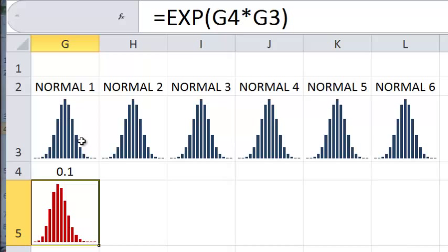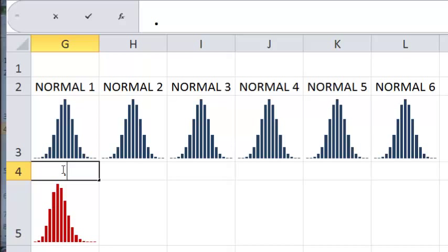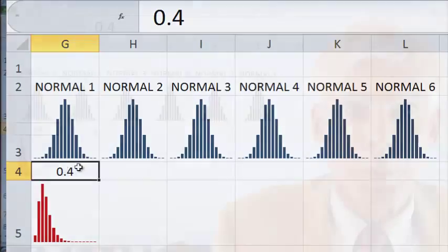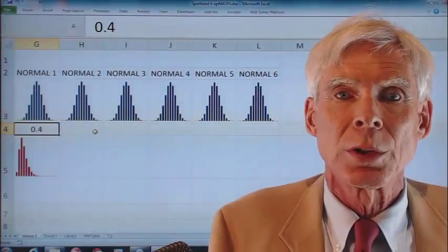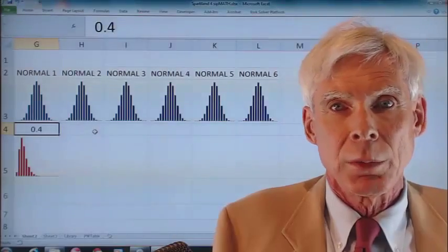And look what happens when I change the numbers here. 0.1, 0.2, 0.3, 0.4. Oh, did I mention that each keystroke is 10,000 trials? Of course I did. But I just can't resist saying it again.